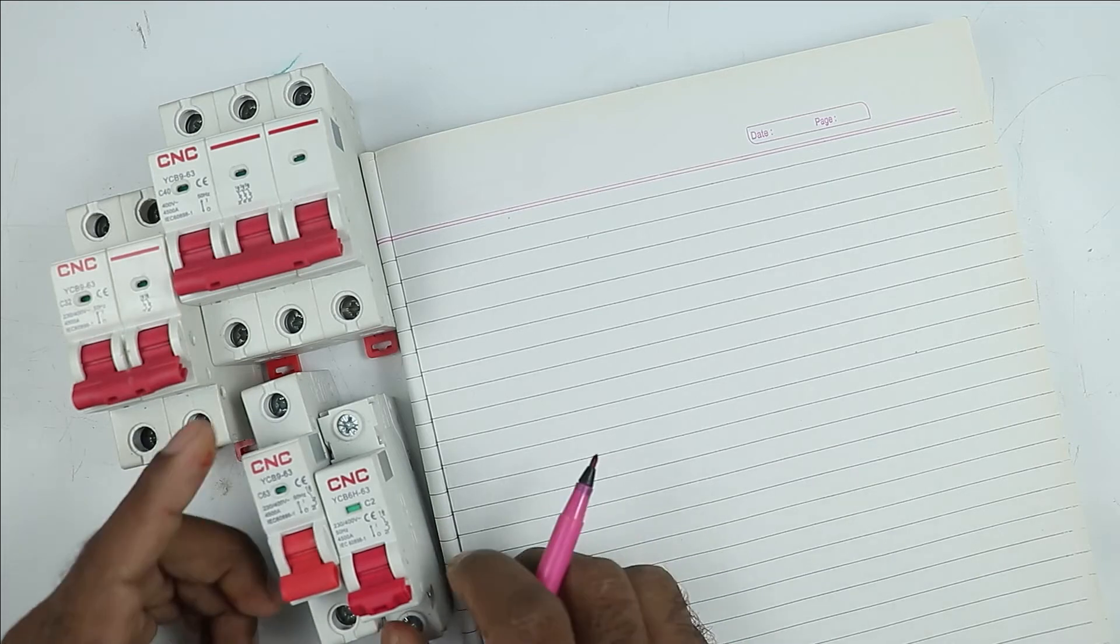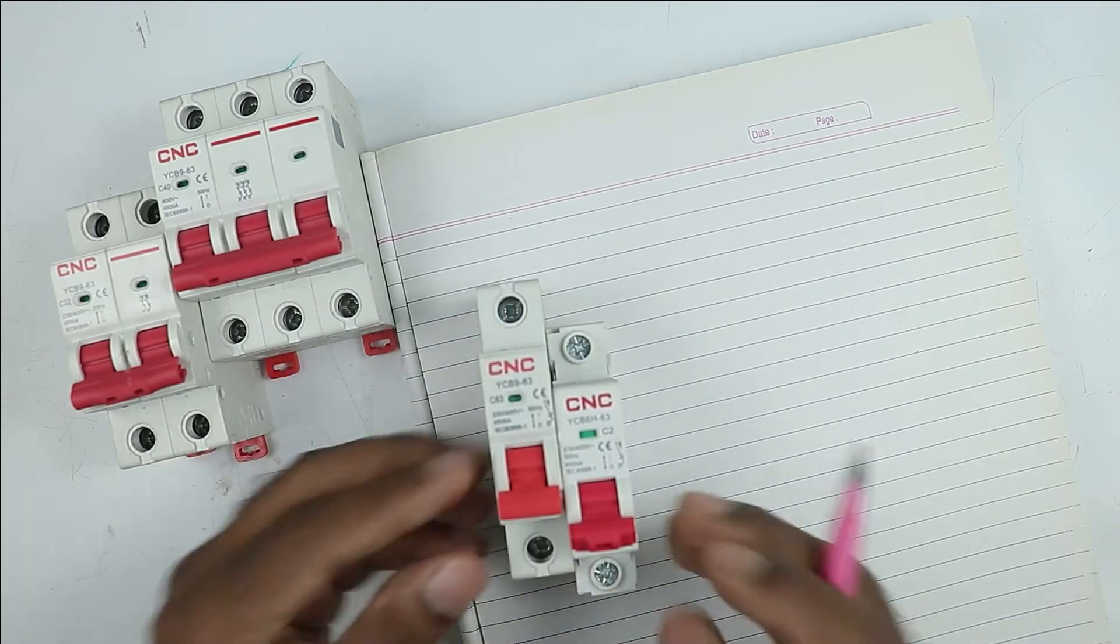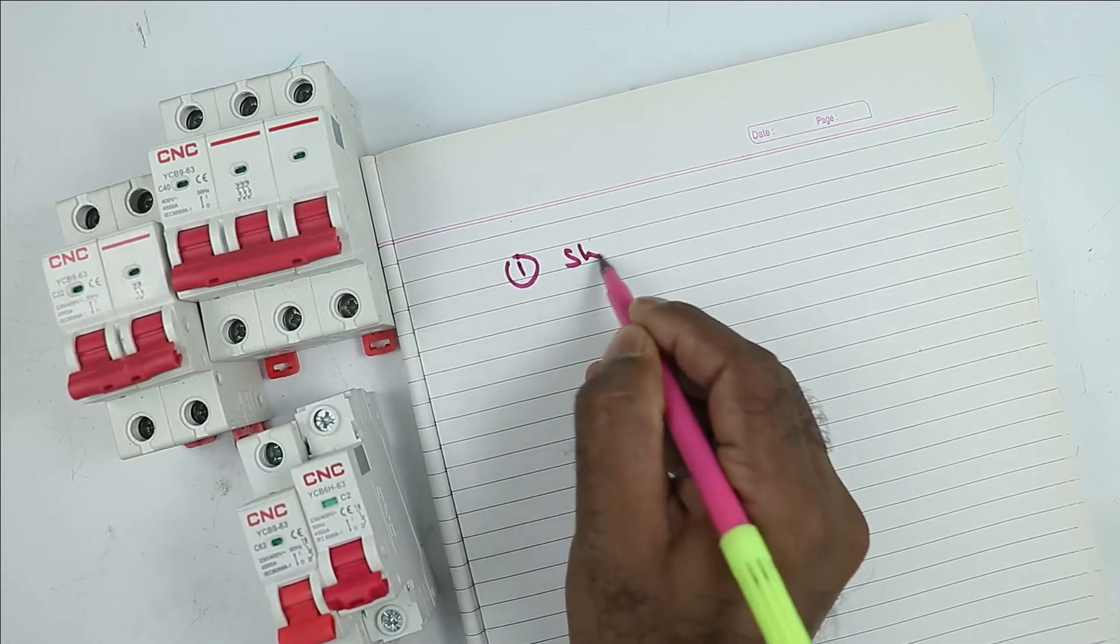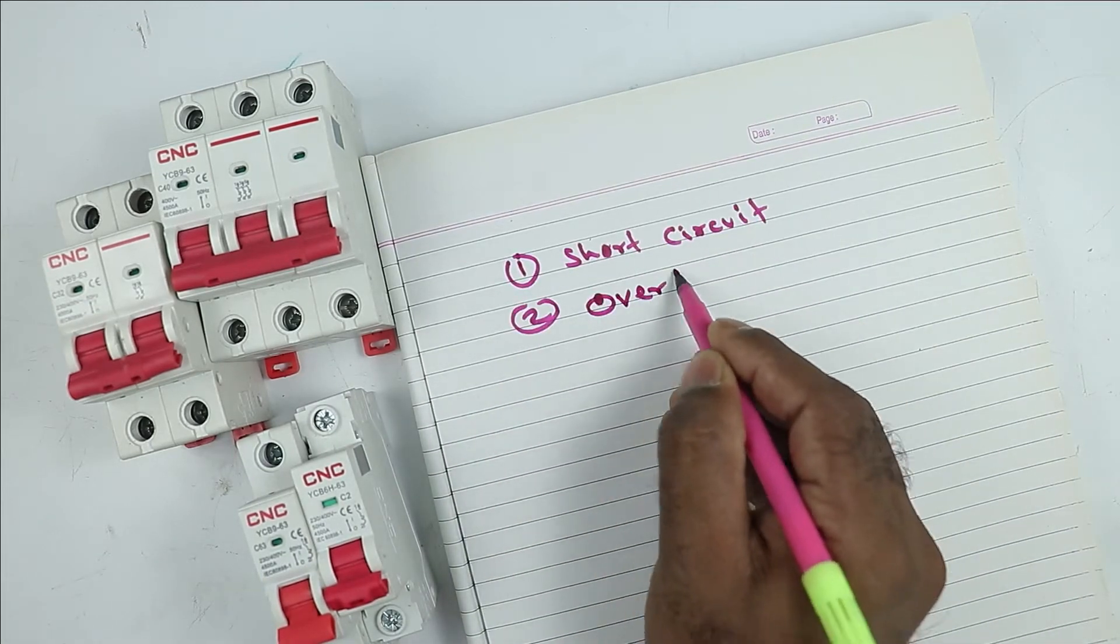Friends, first of all, let me tell you about this MCB. MCB provides two types of protection. First one is from short circuit. Second is from overload.